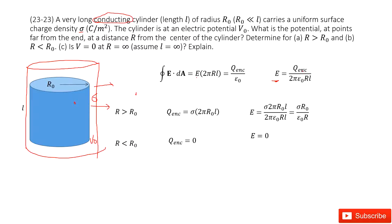The enclosed charge is just the charge at the surface, so we use the surface charge density times the surface area 2πr₀l. Substituting this Q_enclosed in, the 2π's and l's cancel, and we get the electric field function for outside.